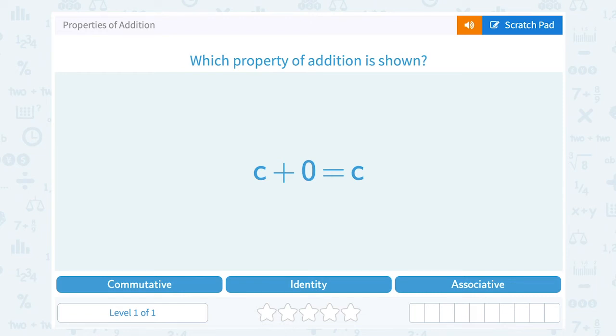Let's take a look at the properties of addition. Which property of addition is shown? We have C plus 0 equals C.